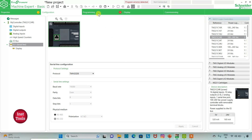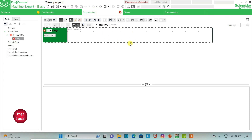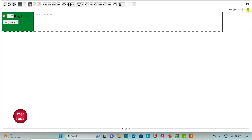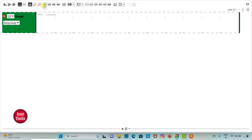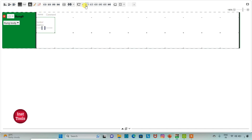Then I will go to the programming tab, where we will be drawing the ladder diagram. I will click on full screen mode and zoom in. If switch 1 is on then motor 1 and motor 2 will be on. If switch 1 is off then motor 1 will be off and motor 2 will be on — so we will take motor 2 as a set coil, as on turning switch 1 off, motor 2 still remains on. And we will take motor 1 as a normal coil.